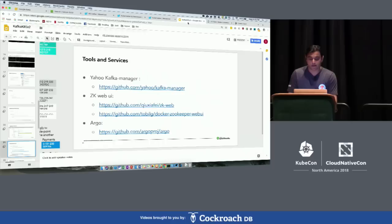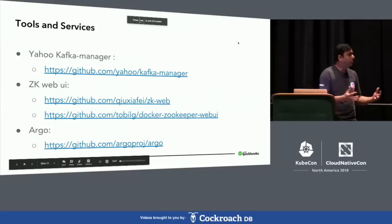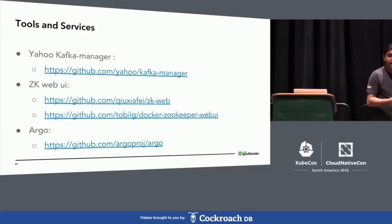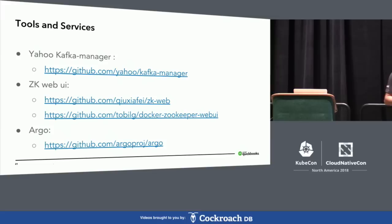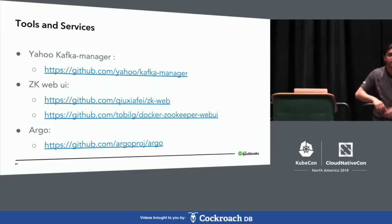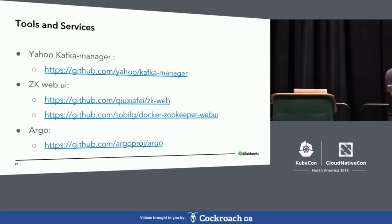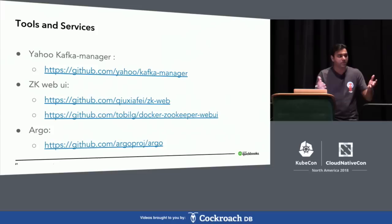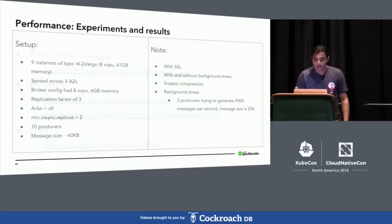We also used Argo, a workflow engine for Kubernetes. People always asked how to do basic operations or tests on the cluster — create a topic, write 100 messages, read 100 messages. We created one workflow for basic tests, another for stress tests, and a few others for specific needs. We shared these YAML workflow files with teams so they could tweak and run them on the cluster to get visibility into how the Kafka cluster was running.